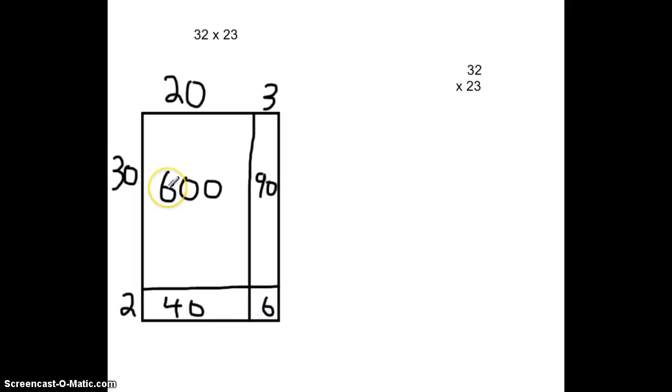Adding all of these together, we get 600 plus 90 plus 40 plus 6 for a total of 736. So we find that the area of this rectangle is 736, which means that 32 times 23 is equal to 736.